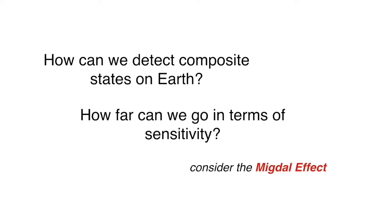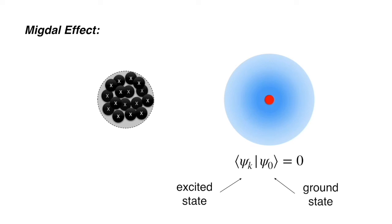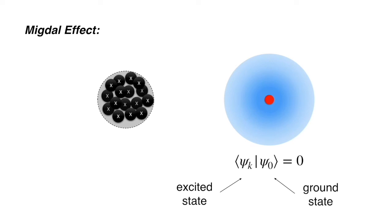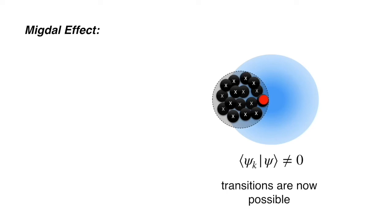Electron transitions are typically forbidden in an atom that is in its ground state. If the composite causes a nuclear recoil on a short time scale, electrons enter a new boosted state in which transitions are now allowed. The atom can then shed photons or electrons.